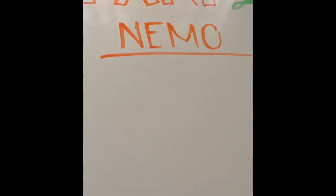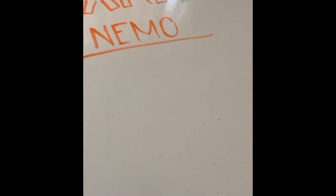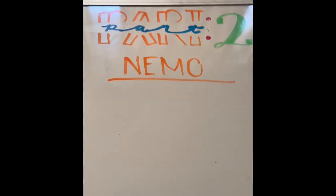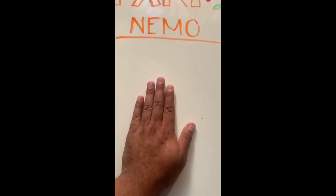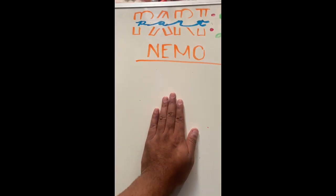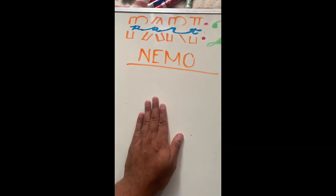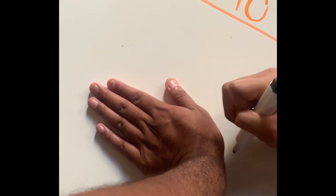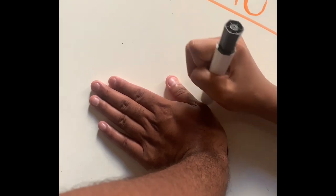As you can see, it says Nemo, so we're going to be drawing a clownfish. Same thing, we're going to use our hand. But for this demonstration, we are going to turn our hand towards the left, and she's going to trace starting from my wrist.